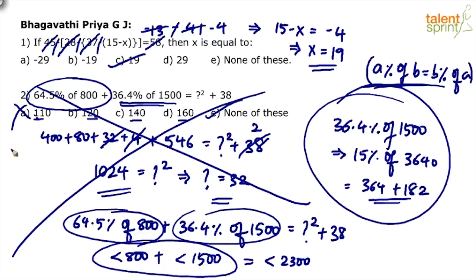If your left-hand side is around 2300 or much less, none of these options satisfy. When you put 110 squared, it's 12,100. Your right-hand side is 12,100 plus 38, completely imbalanced. Left-hand side is less than 2300, right-hand side is tens of thousands. Clearly option A gets eliminated, and once 110 is eliminated, 120, 140, 160 also get eliminated. So the answer is option 5, none of these. That's smart and won't take more than a couple of seconds. Always look at the options first in simplification questions.